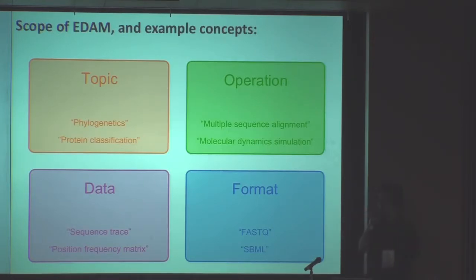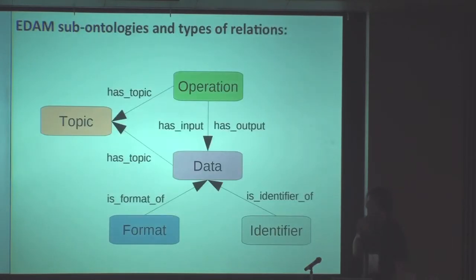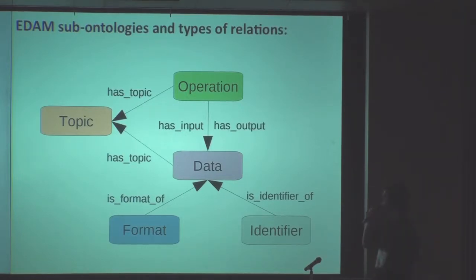Types of data include, for example, sequence trace, sequence, sequence record, position frequency matrices, UniProt accession, or Ensembl gene ID — all those types of data. And formats of data such as FASTA, FASTQ, SBML, BioXSD, and RDF. The four main sub-ontologies of EDAM are operation, topic, data, and format. Identifiers and other sub-ontologies are actually part of data. There are also some relations maintained within EDAM between the concepts, and a couple more relations or properties defined in EDAM that are not maintained between the concepts.